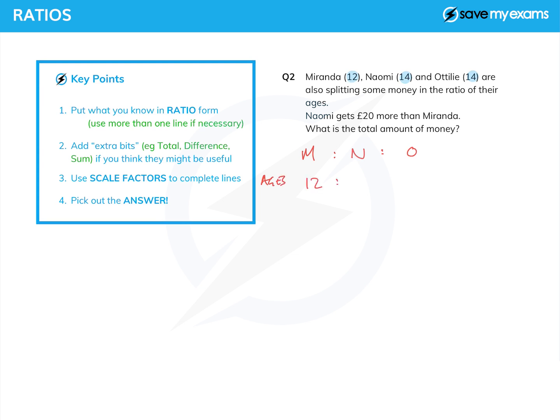And again, let's write down ages there so we know what we're doing: 12 to 14 to 14. Now what about the rest of the information? Naomi gets £20 more than Miranda, so that's going to need a new line because that's in money. And what are we given? We're given the difference between Naomi and Miranda, so Naomi minus Miranda in money is 20.